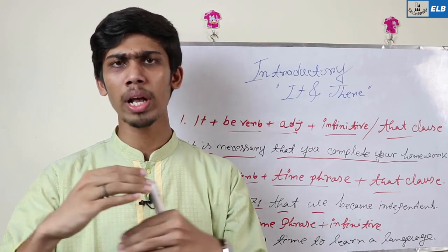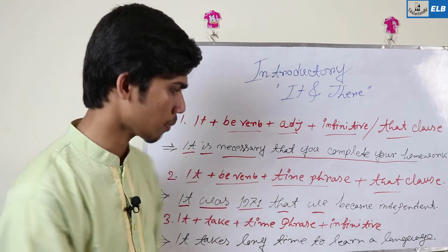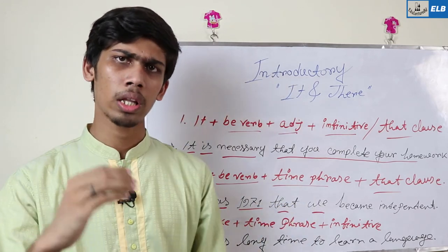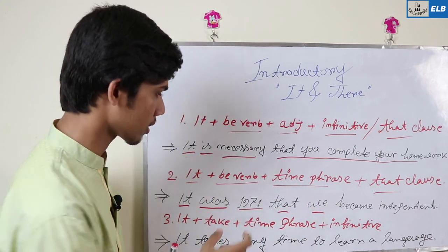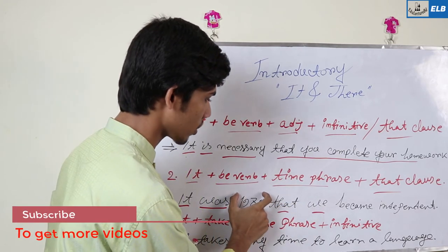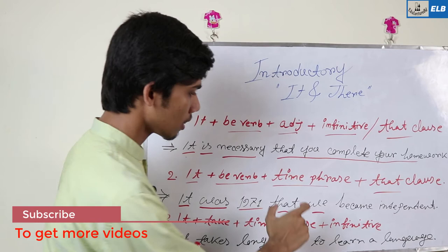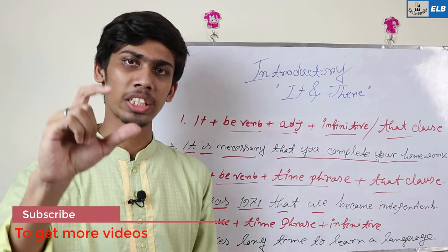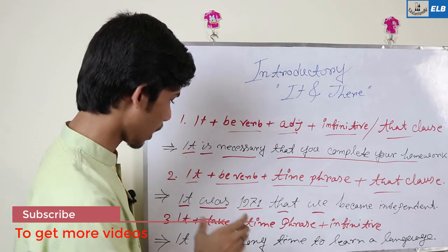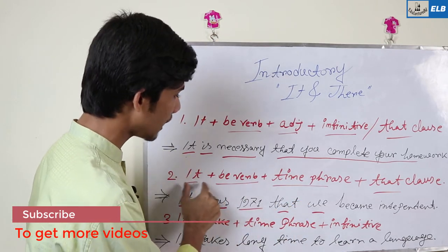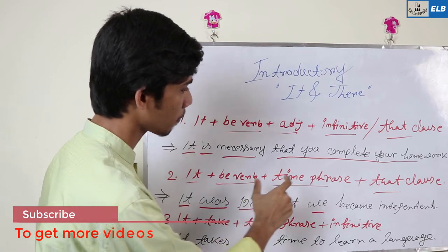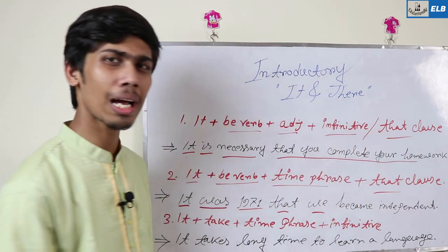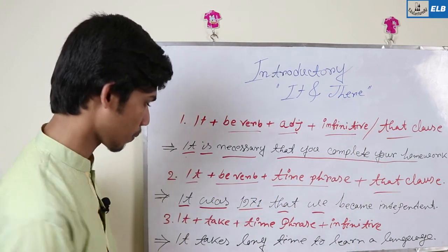With a time phrase, you can add a that clause. If you don't have a time phrase, you cannot give a that clause. So the rule is: it + be-verb + time phrase, and then you may give a that clause.